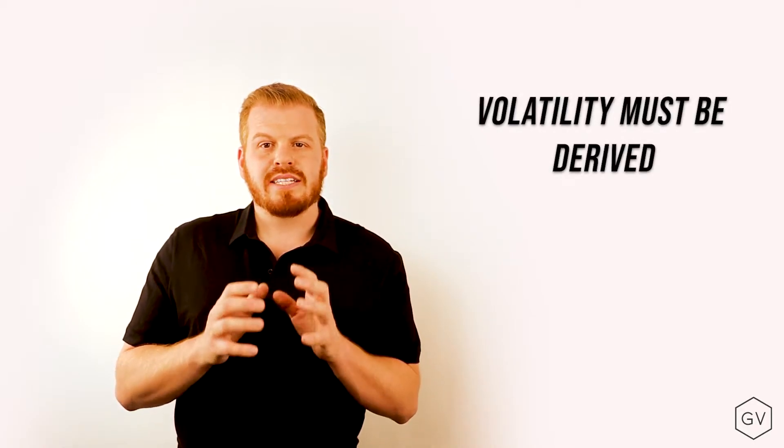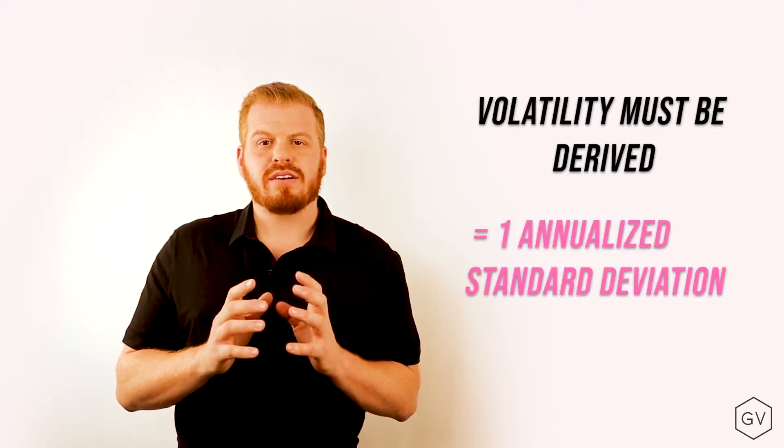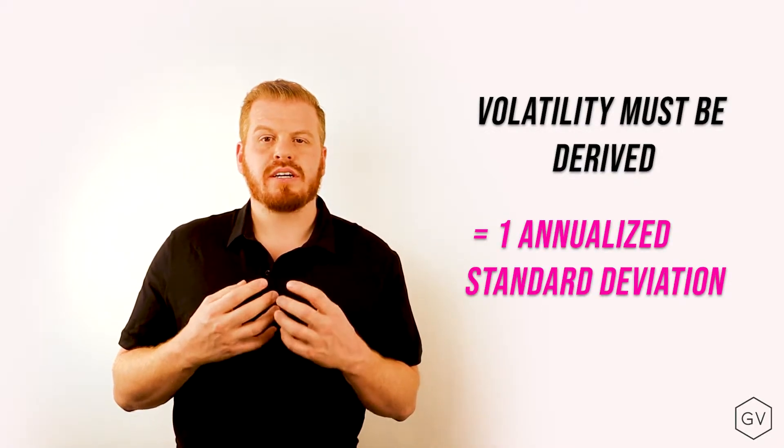Unlike spot prices, historical volatility is not directly observable. It needs to be calculated. It's often quoted as the one-year standard deviation of continuously compounded returns.